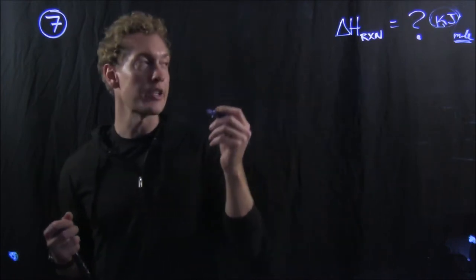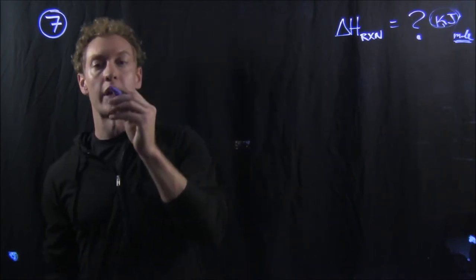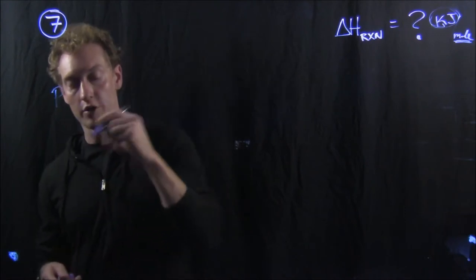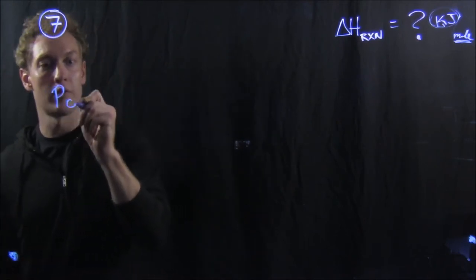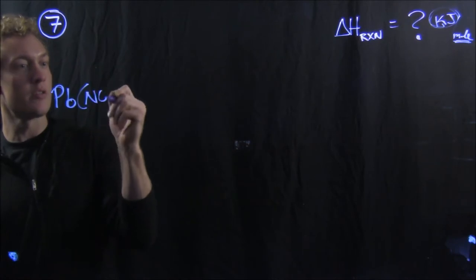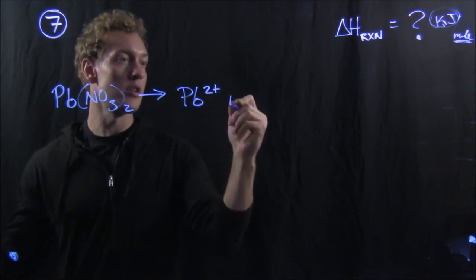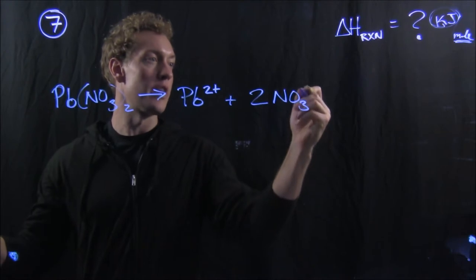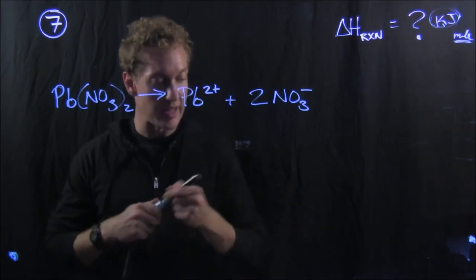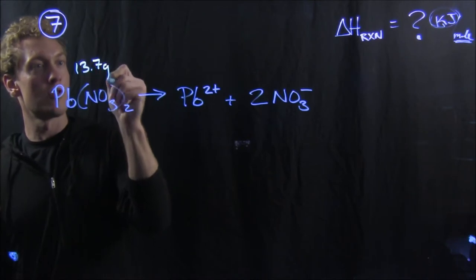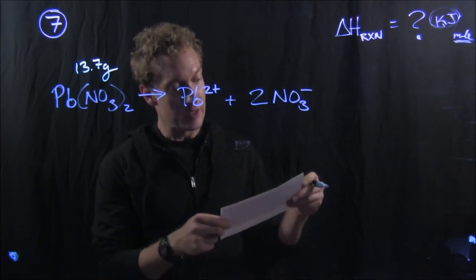In number seven, the reaction is the decomposition or dissociation of lead two nitrate. So the reaction is Pb(NO3)2 dissociating into Pb2+ and two nitrate ions. And in the problem, it says that 13.7 grams of the reactant decompose or dissociate in the medium.